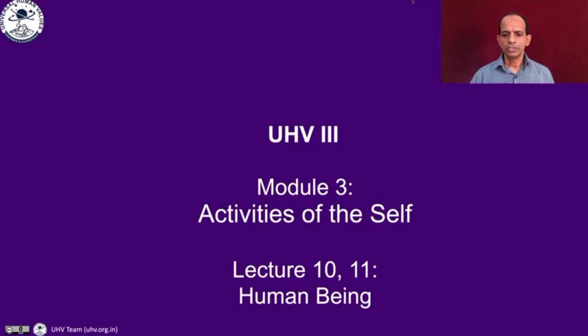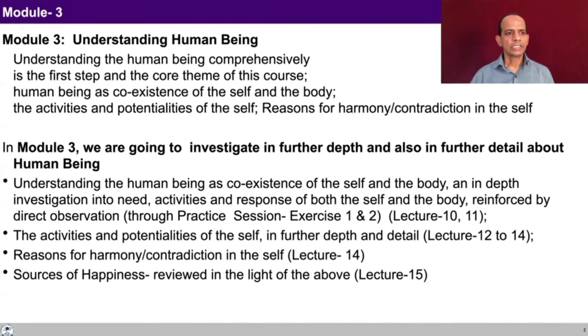In lectures 12 to 14, we look into the activities and potentialities of the self and also try to see what would be the basis for harmony or contradictions in the self. In lecture 15, we'll look into the various sources of happiness. So in this module we are going to talk about the activities of the self, and in lectures 10 and 11, about the human being. Module 3 is about understanding the human being.